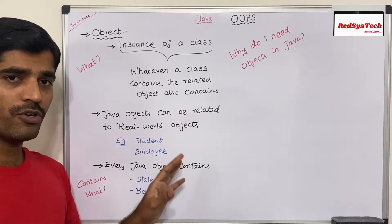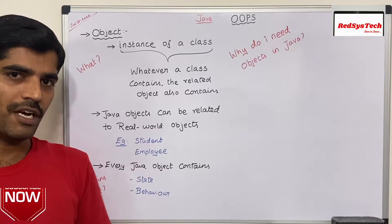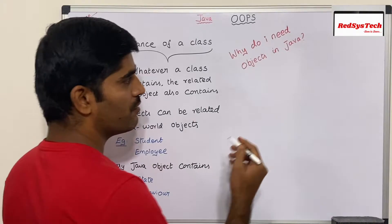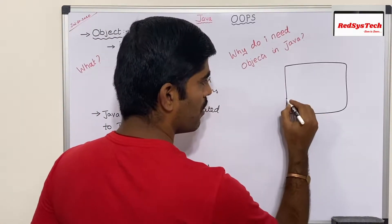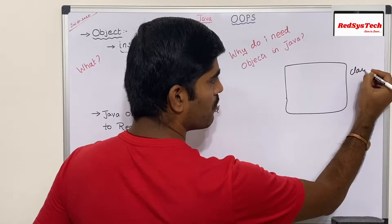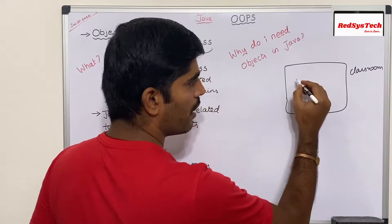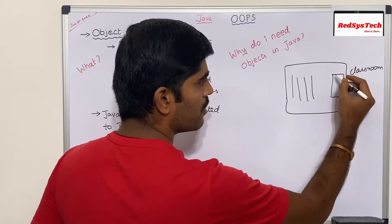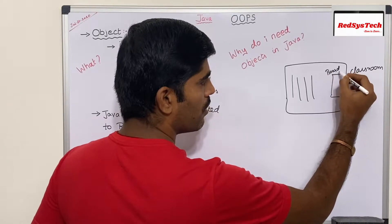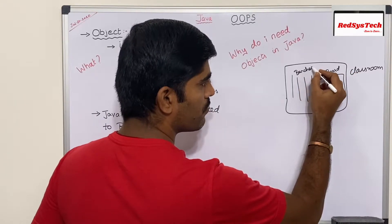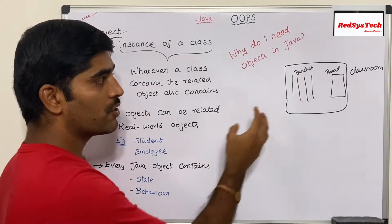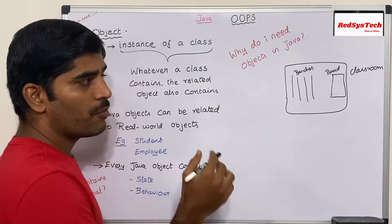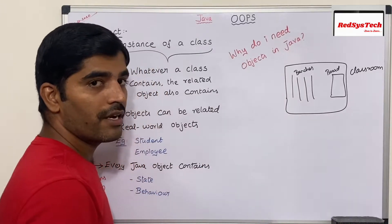Why do we need to create an object in Java? That's the basic question we should have. So let's say I have a classroom which is a closed one. Inside this classroom there are some materials — some benches and a board. I want to get access to these materials inside the classroom and bring them outside, but the problem is that this classroom is closed. So how can I get that?